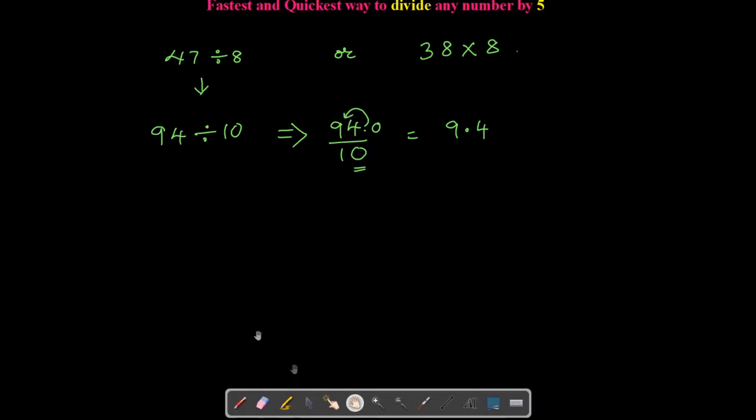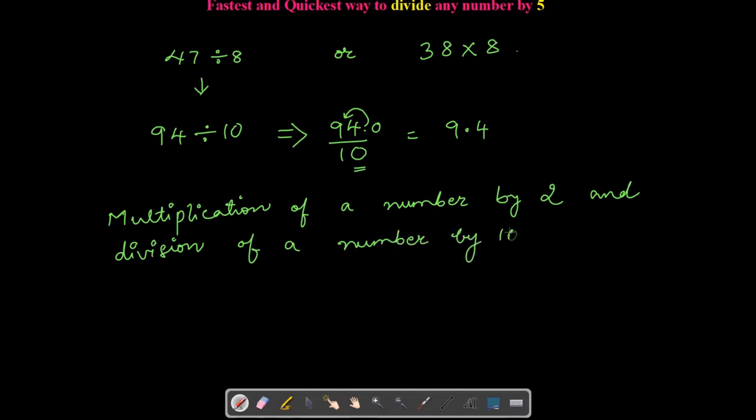So now we can say that multiplication of a number by 2 and division of a number by 10 is quite simple. Isn't it?